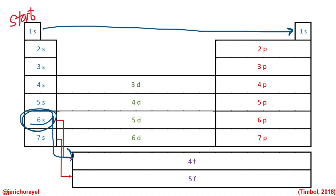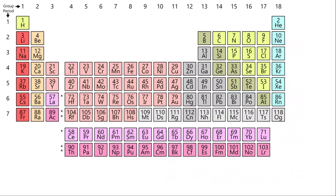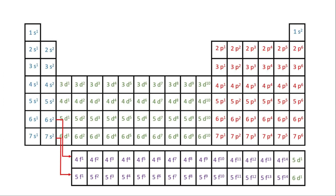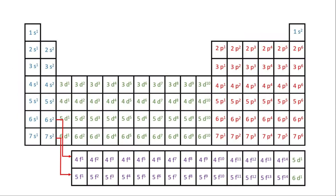This is the actual periodic table with electron configuration. Each electron configuration corresponds to an element. For example, hydrogen is 1s1. Bromine, element 35, has a last electron configuration of 4p5.